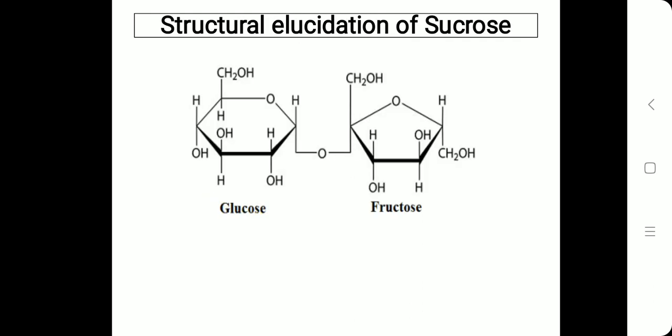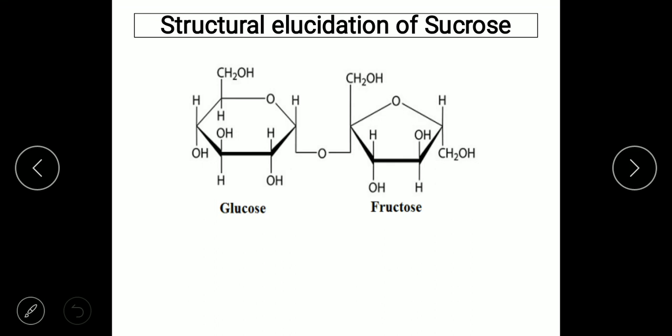Sucrose, however, is a non-reducing sugar. This is the structure of sucrose — it is made up of two monosaccharide units, glucose and fructose, linked by a glycosidic linkage at C1 of glucose and C5 of fructose. Sucrose is a non-reducing sugar because the carbonyl group is not available to be reduced in the presence of Fehling's solution.